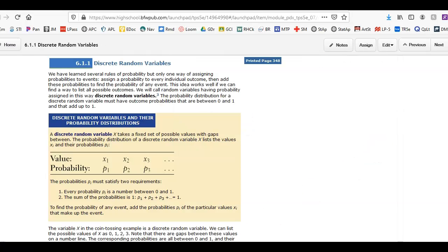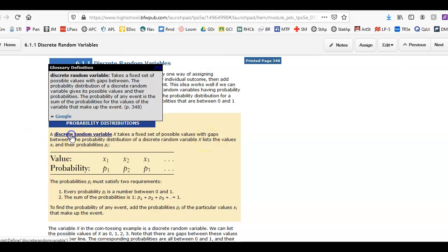So discrete random variables, as I said, there's a gap between the outcomes. So how many AP classes are you taking? 0, 1, 2, 3, 4. You can't take 1.2 AP classes. How many siblings do you have? These are examples of discrete random variables.